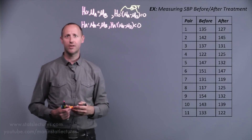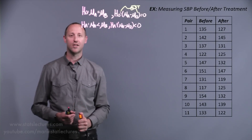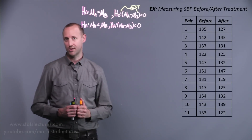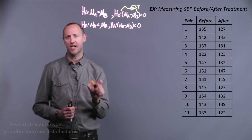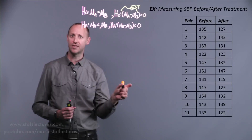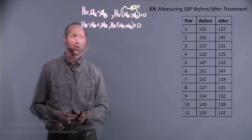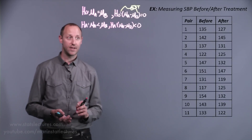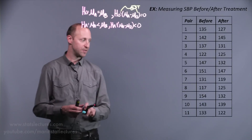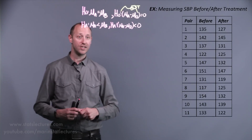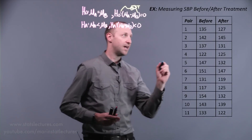We learned how to test hypotheses and build confidence intervals — they generally rely on taking an estimate and adding a margin of error: estimate plus or minus about two standard errors. With paired data, we have measurements before and after, so we can take advantage of that pairing and look at the change or the difference.